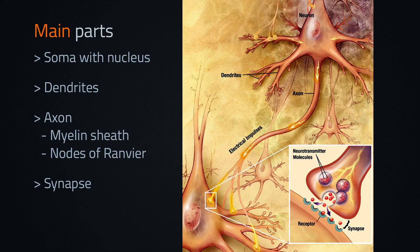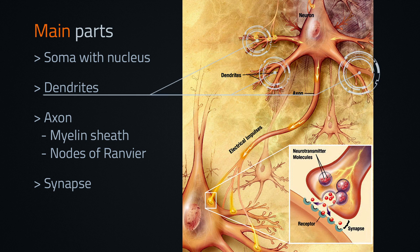A neuron consists of a cell body with a nucleus, and dendrites. Dendrites are extensions of a neuron through which it receives electrical signals from other cells.